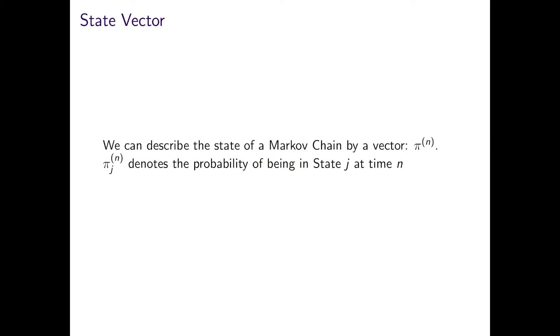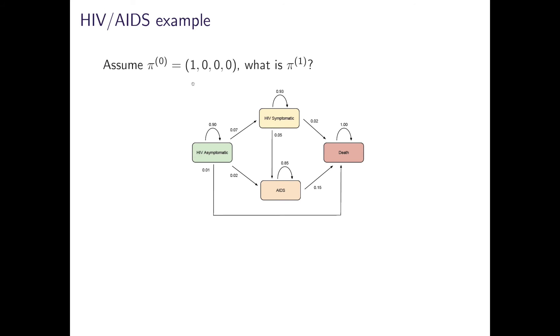Or I might specifically want to know what is the probability of being in each state after a certain time? Well, we can describe this with a vector, pi n, in which each entry gives us the respective probability of being in each of our states.